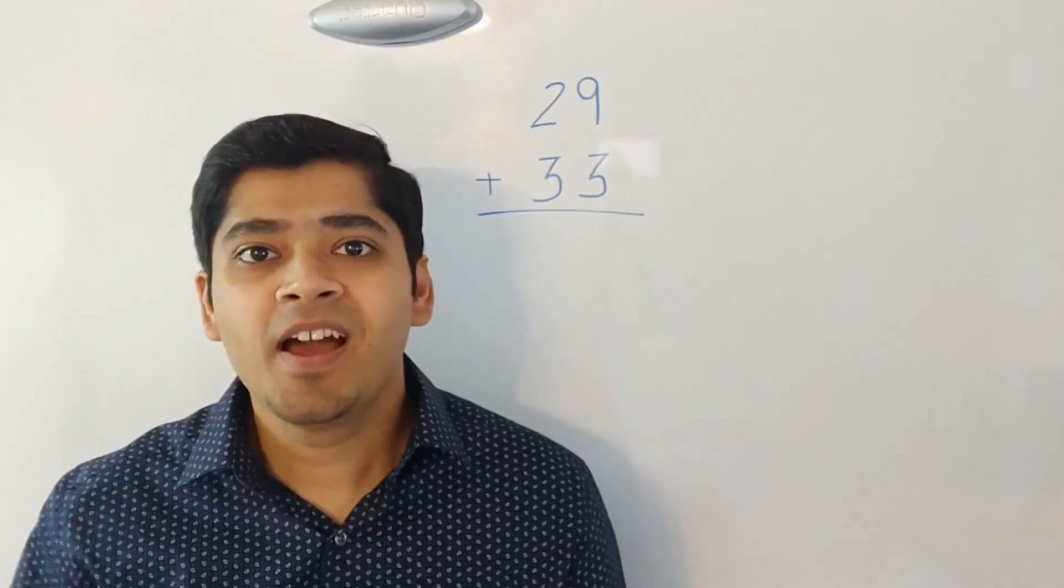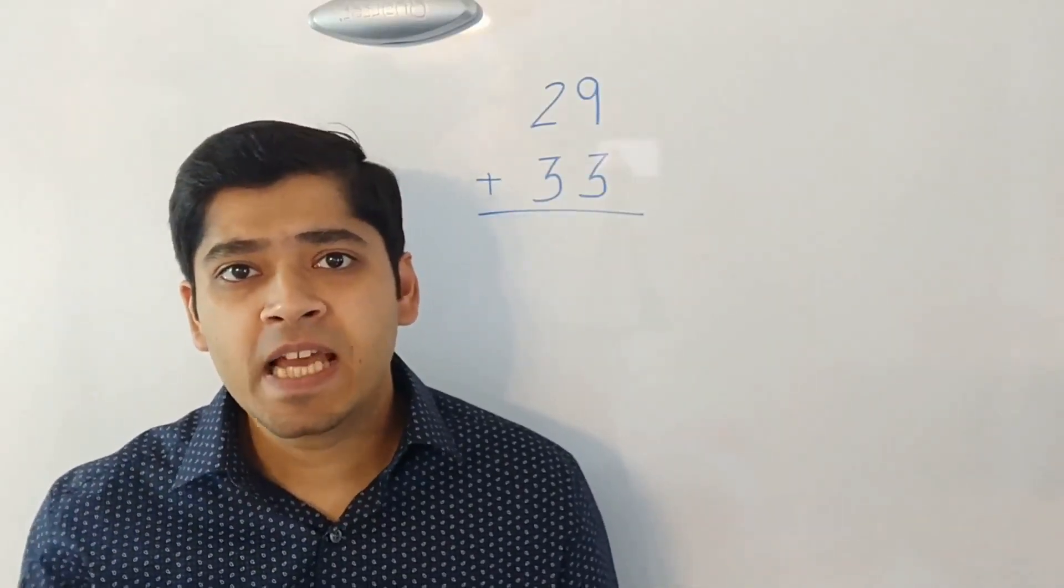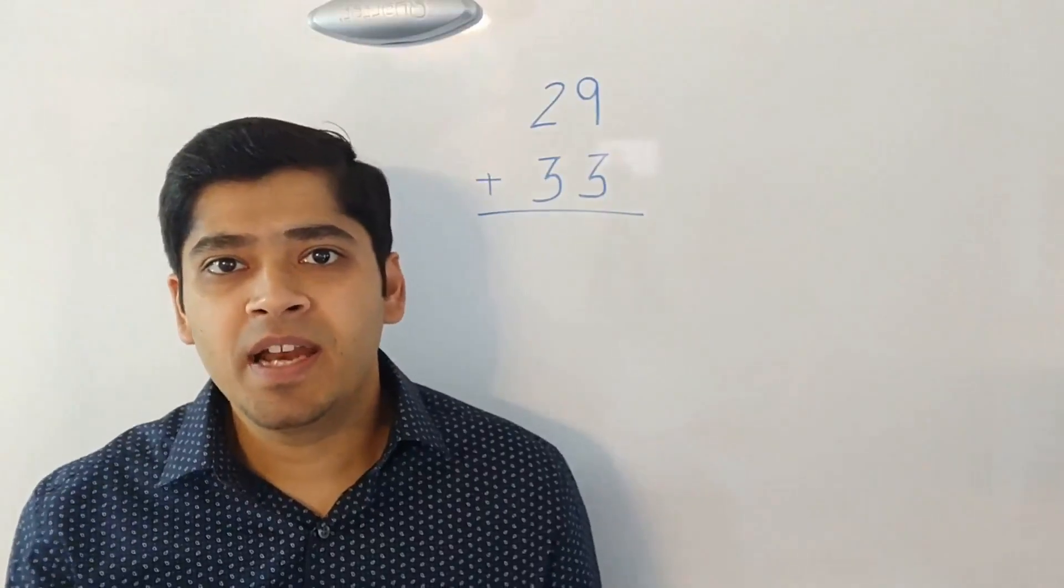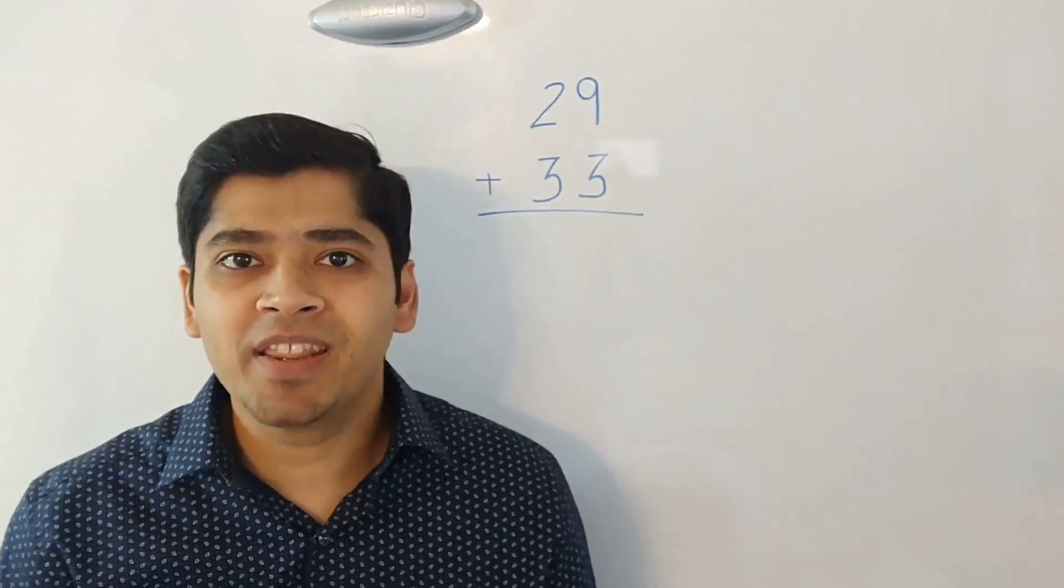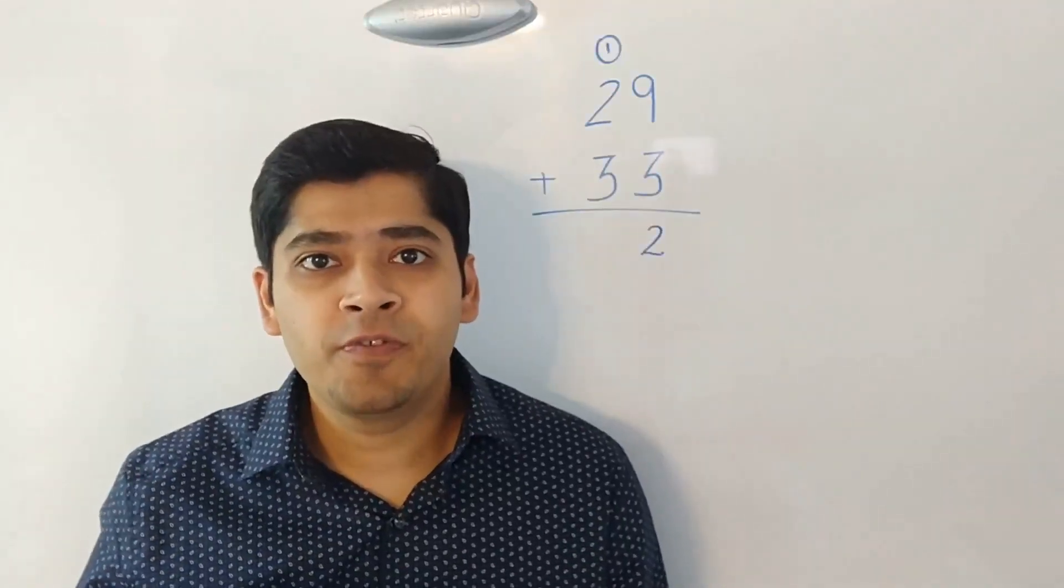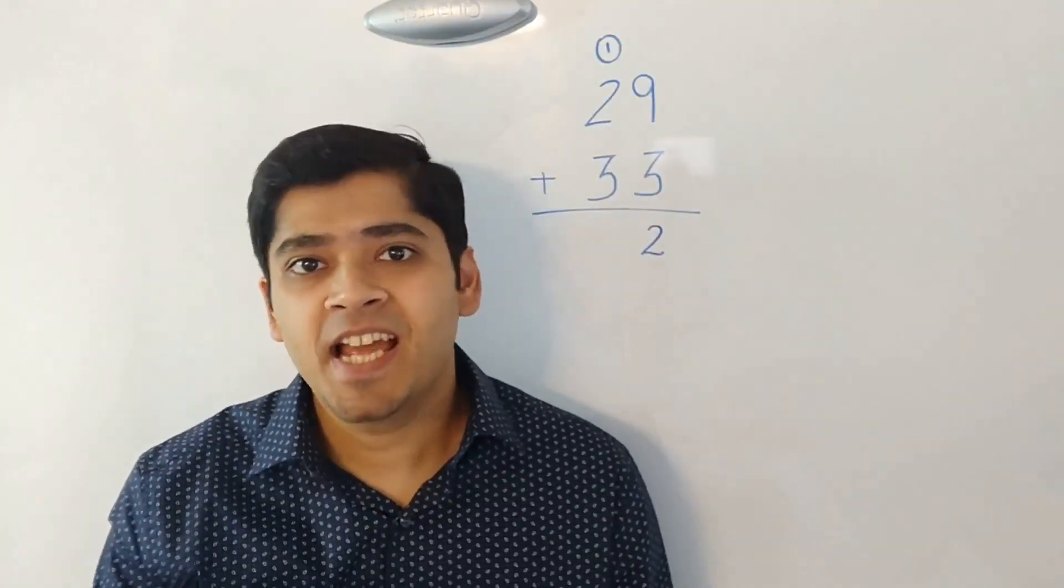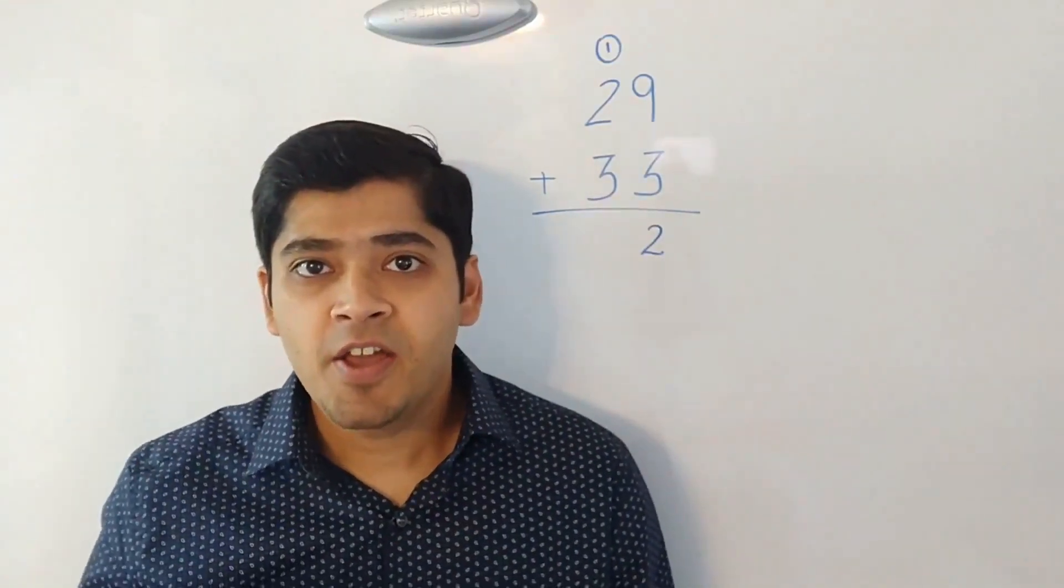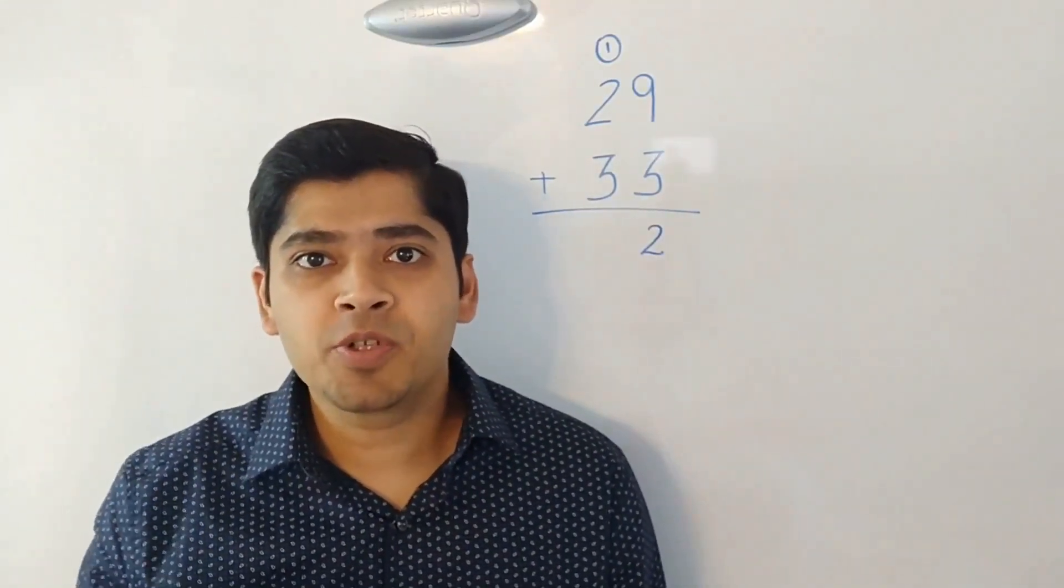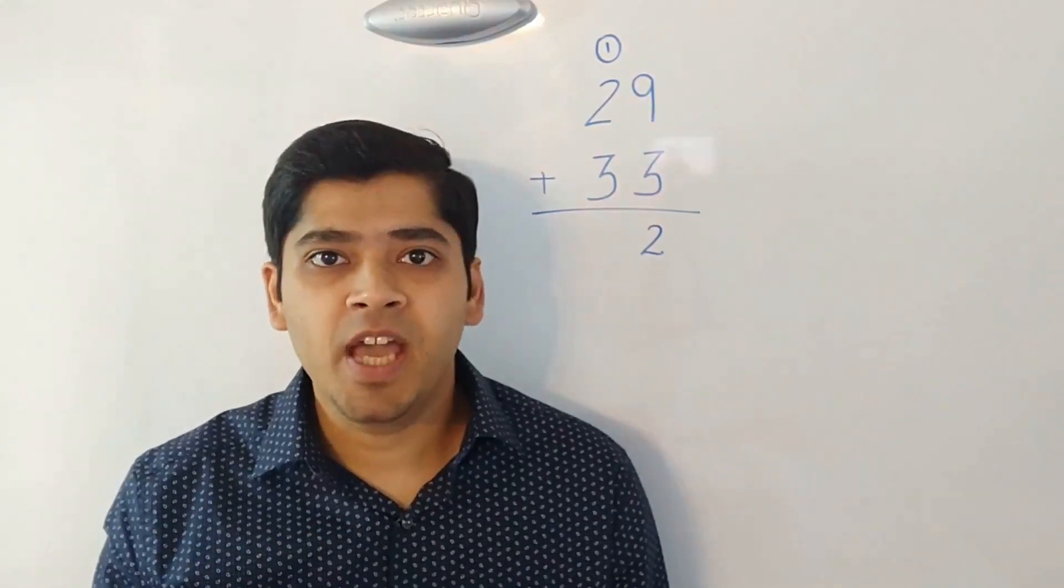To understand how addition really works, let's take an example. Let's take two numbers 29 and 33 and let's try to add them. We first sum up the digits at the units place. That is 9 and 3. They sum up to 12. So we put 2 at the bottom and we carry over 1.